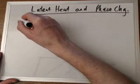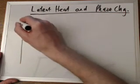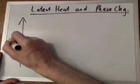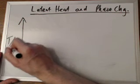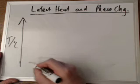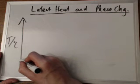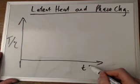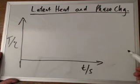So on the y-axis I will have the temperature in degrees C and on the x-axis I will have a time let's say in seconds.